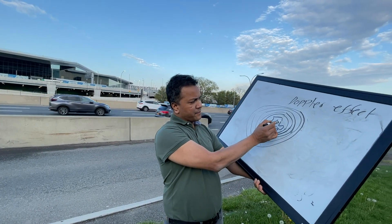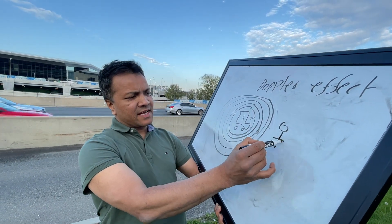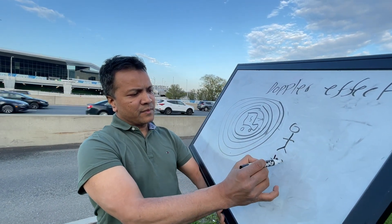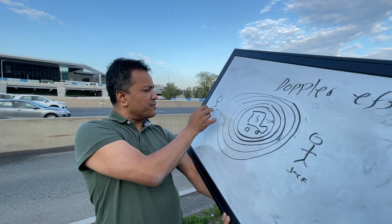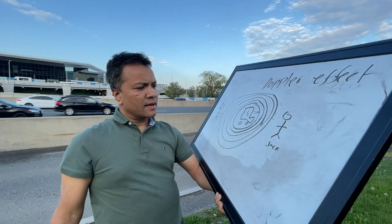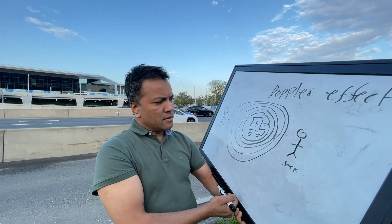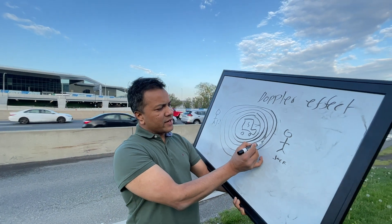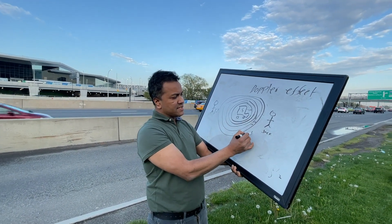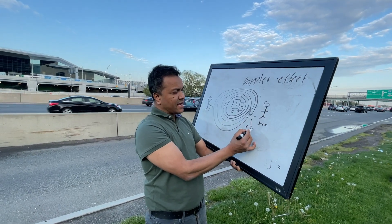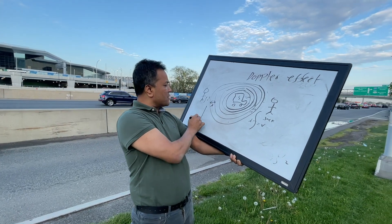Consider a truck moving to the right. Observer Jack is on the right side and observer Jill is on the left side, and both experience the sound from the driver honking. As you can see, the wavelength experienced by Jill is bigger but her frequency is smaller. On the other hand, Jack's wavelength is smaller but his frequency is bigger. For both Jack and Jill, the velocity remains constant.